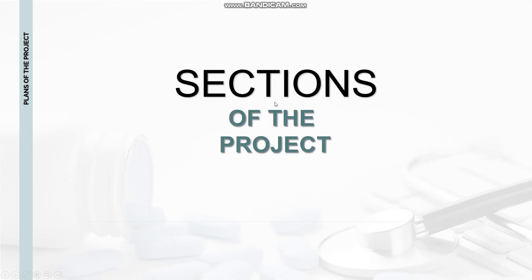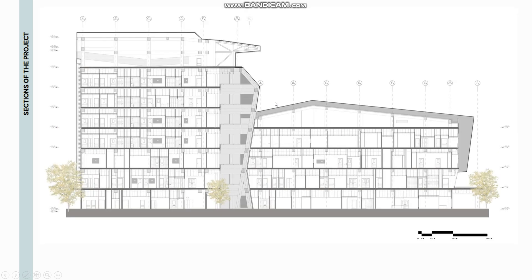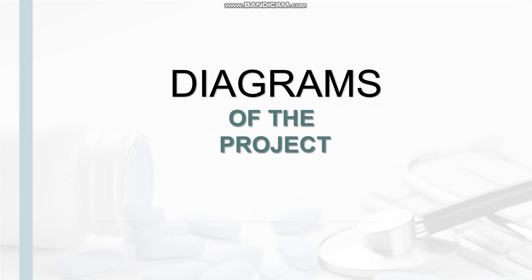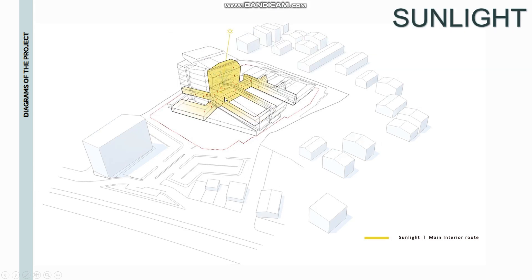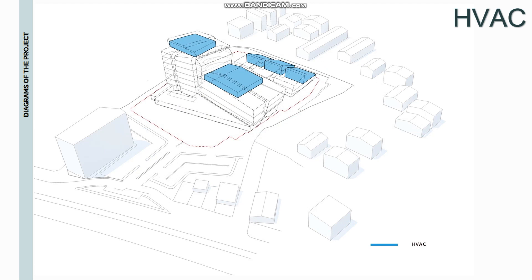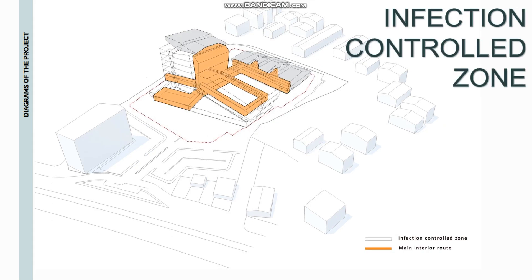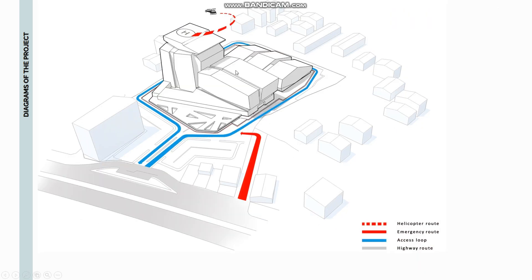Section of the project is shown. Diagrams include: main interior route, sunlight diagram, HVAC, infection controlled zone, helicopter route, emergency route, access loop, and high-traffic route.